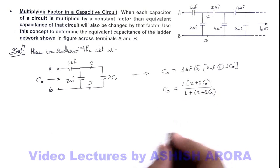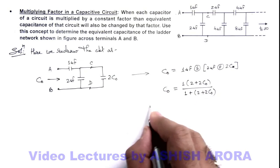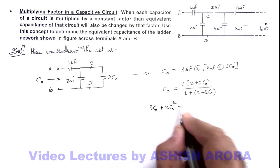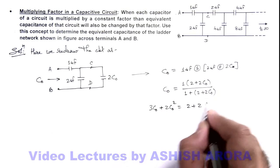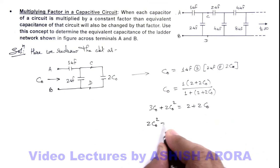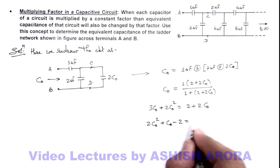If we further simplify this, it'll give us 3C_not plus 2C_not squared equals 2 plus 2C_not. And again we are getting a quadratic equation as 2C_not squared plus C_not minus 2 equals zero.